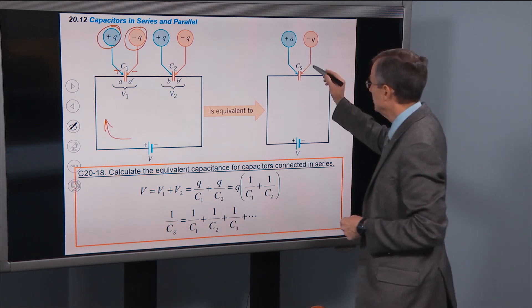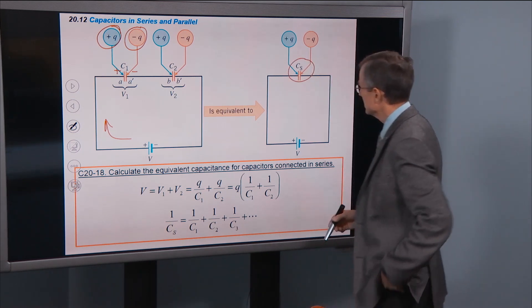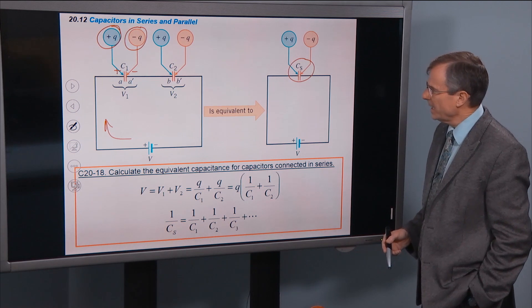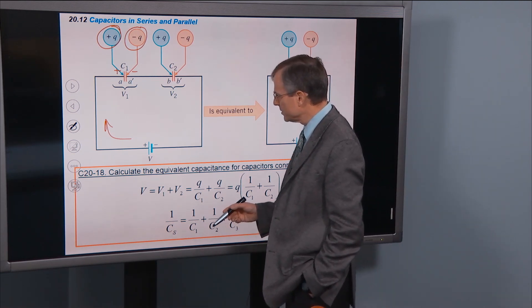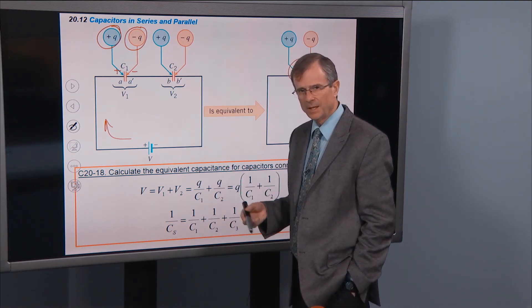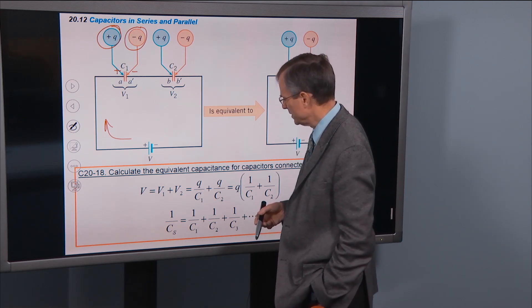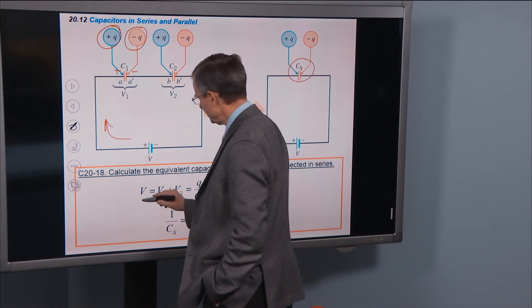And that's equivalent to an equivalent capacitance of Cs. How do you do it? Well, we're going to use the same technique that we did for resistors in series.